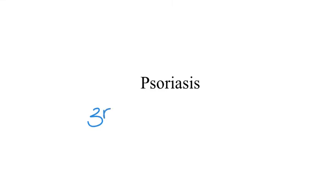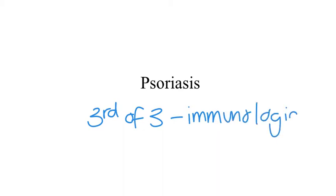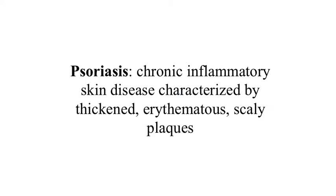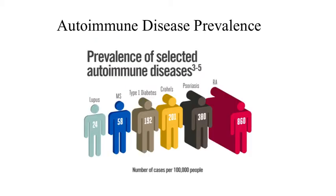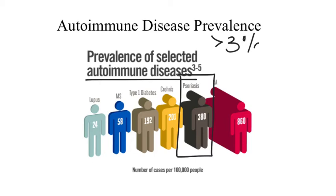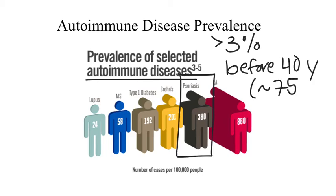This is the last in the series of videos covering immunologic disease states or autoimmune diseases. The last autoimmune condition we will talk about is psoriasis. Psoriasis is a chronic inflammatory skin disease characterized by thickened red scaly plaques. It is the second most common autoimmune disease after rheumatoid arthritis, with a prevalence in the United States estimated as high as 3%. Its peak age range of diagnosis is prior to age 40, and over 75% of patients are diagnosed before this age.